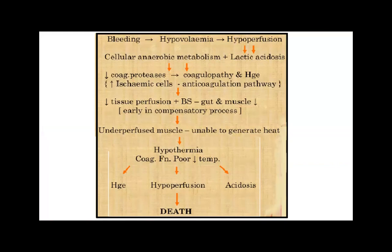Hypovolemia leads to hypoperfusion — when the blood volume is reduced, the blood supply to the organs is also reduced. This ultimately leads to hypoxia, lactic acidosis, and cellular anaerobic metabolism. As a result, proteins are reduced, coagulopathy begins, ischemic cells increase, anticoagulation pathways are activated, and there is decreased tissue perfusion.